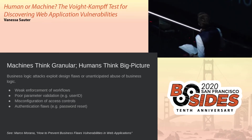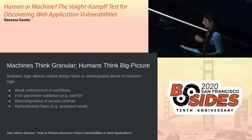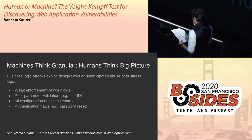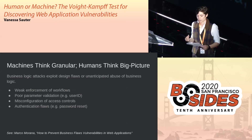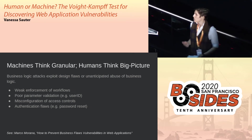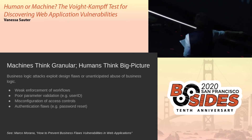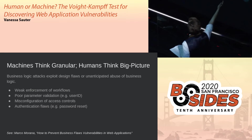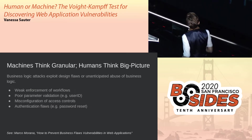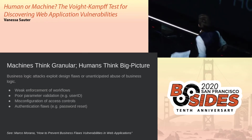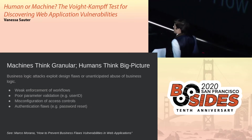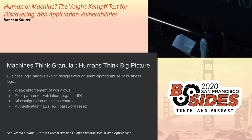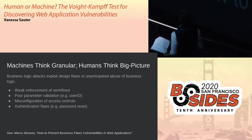As my colleague Travis likes to say, building stuff is hard — it's way easier to break things than to build things. Business logic attacks exploit design flaws or unintended abuse of business logic, like having a user-controllable parameter that is trusted. Research from Marco Marana on preventing business flaw vulnerabilities in web applications gives a list of causes: weak enforcement of workflows, poor parameter validation, misconfigured access control, and authentication flaws. A machine does not have the context required to identify these kinds of vulnerabilities.